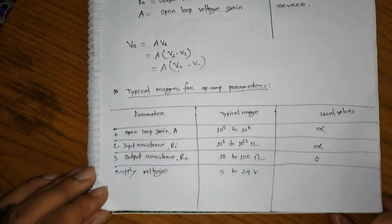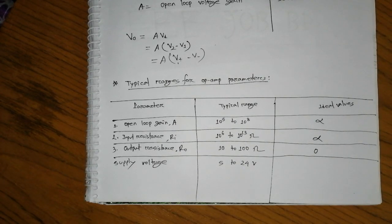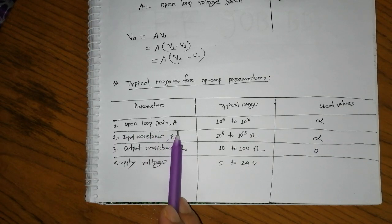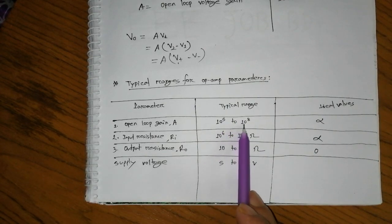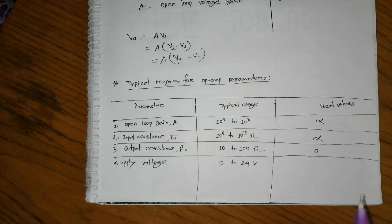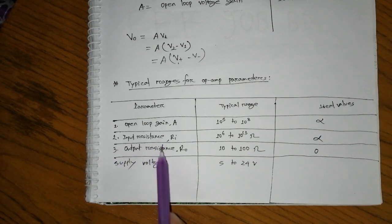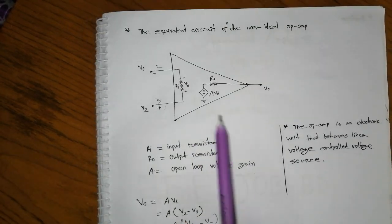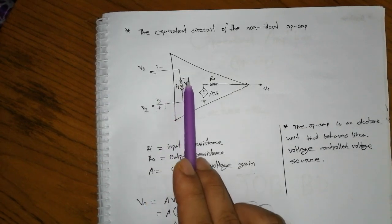The operational amplifier has key parameters: input resistance and output resistance. You can see the typical range for op-amp parameters. The output voltage gain is very high for the operational amplifier. The input resistance is high and the output resistance is low.